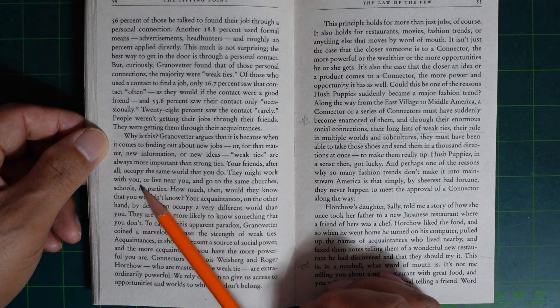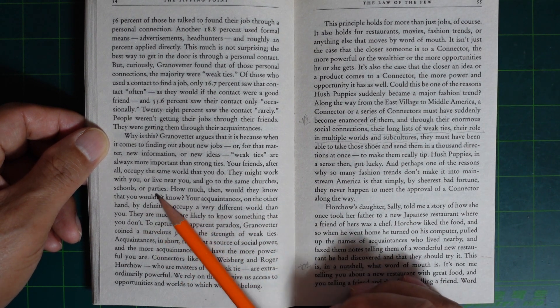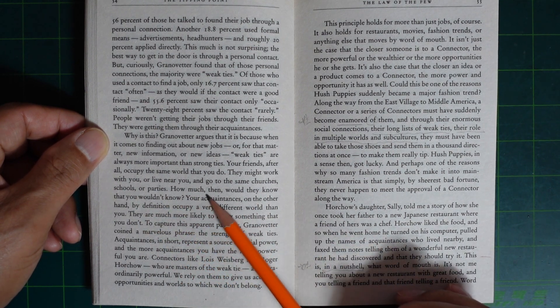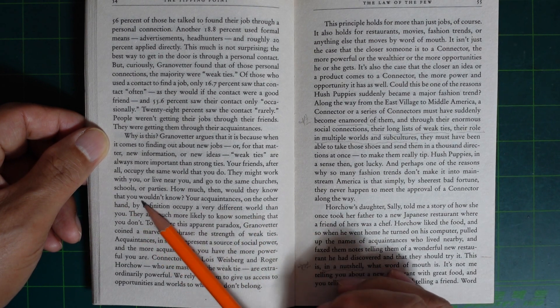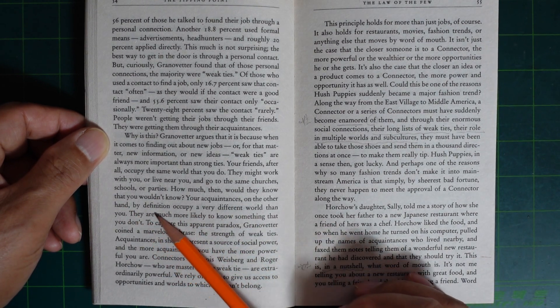They might work with you or live near you and go to the same churches, schools, and parties. How much, then, would they know that you don't know? Your acquaintances, on the other hand, by definition, occupy a very different world than you.